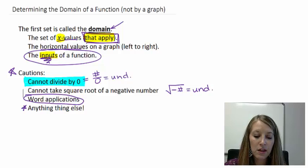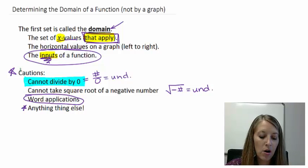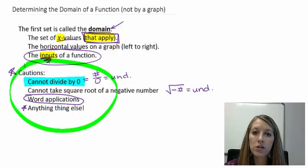We need to be very cautious about specific things: when our denominator comes up to be zero, when our square root comes up to be negative, if we have a word application that has to make sense in real life, or if there is anything else that makes our problem go crazy.